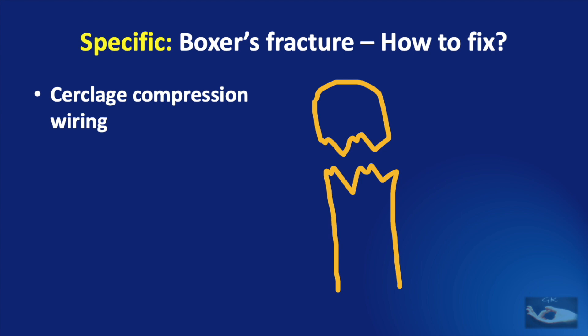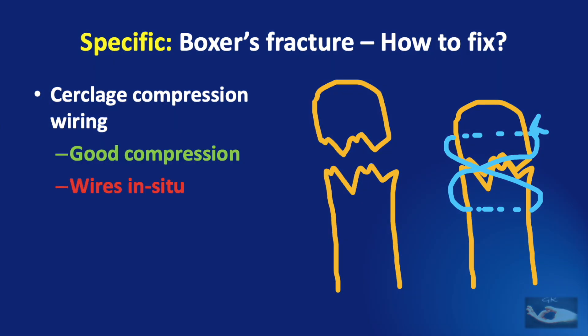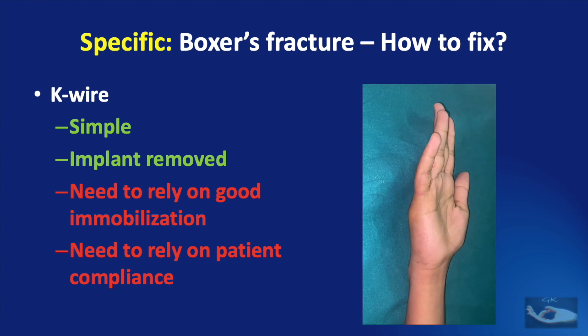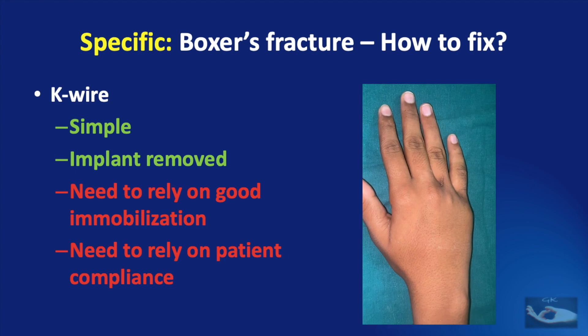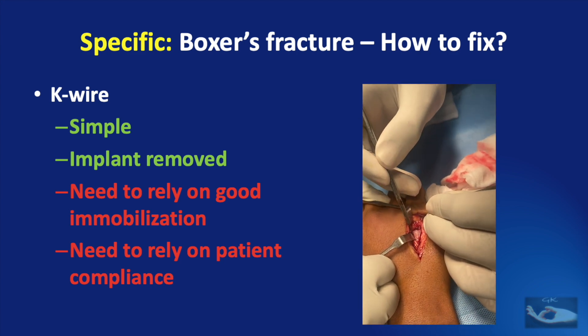Circlage compression wiring uses the principle of tension band wiring, where the tension forces are converted to compression forces. This fixation is done using stainless steel wire of 24 gauge, passed first through the distal segment by a drill hole and then through the proximal segment via a transverse drill hole, knotted in the form of an 8 after reducing and compressing the fracture. The advantage is good compression at the fracture site, but the disadvantage is the wire is left in situ, which may get infected later.